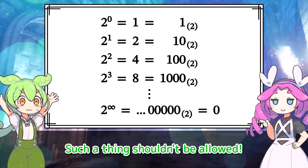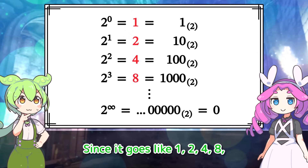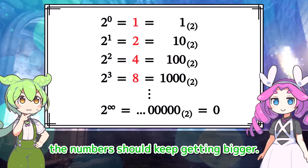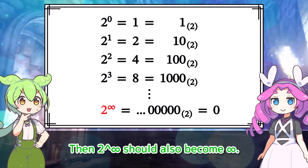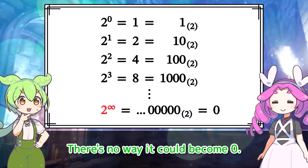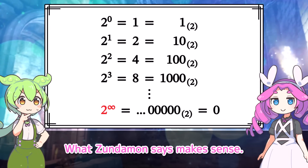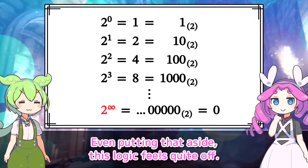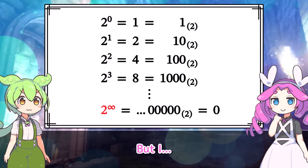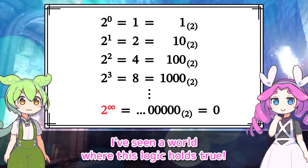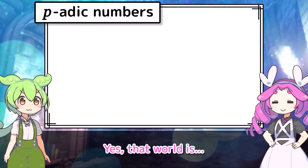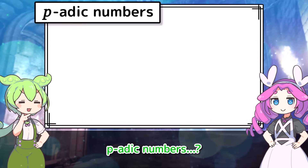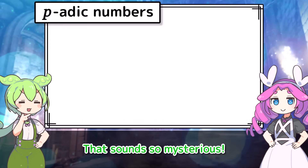That's impossible — such a thing shouldn't be allowed. There's something wrong with this logic. Since it goes like 1, 2, 4, 8, the numbers should keep getting bigger, so 2 to the infinity should become infinity. There's no way it could become 0. What Zindemon says makes sense. To begin with, the notation '2 to the infinity' feels a bit suspicious. Even putting that aside, this logic feels quite off. But I've seen a world where this logic holds true — that world is known as P-adic numbers.